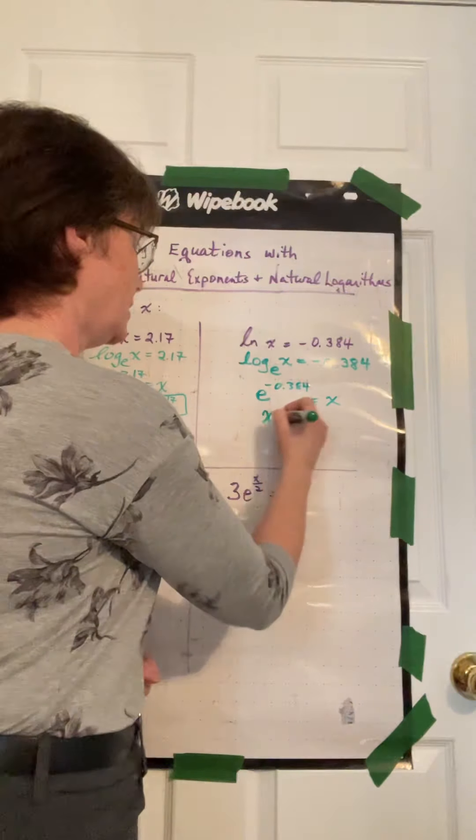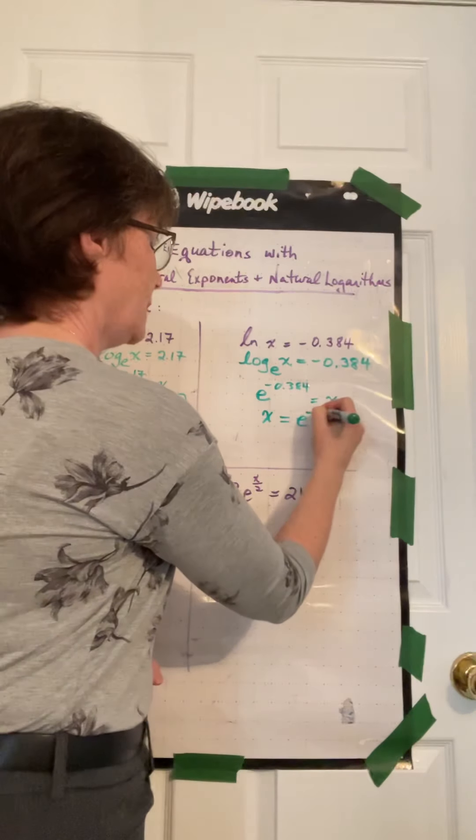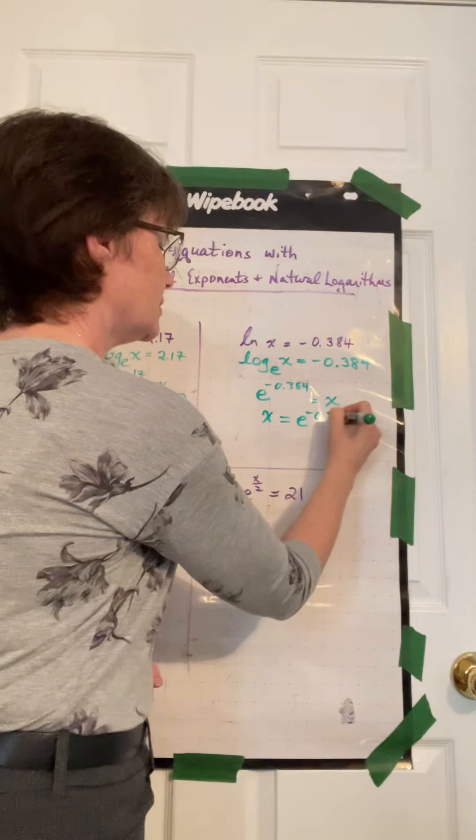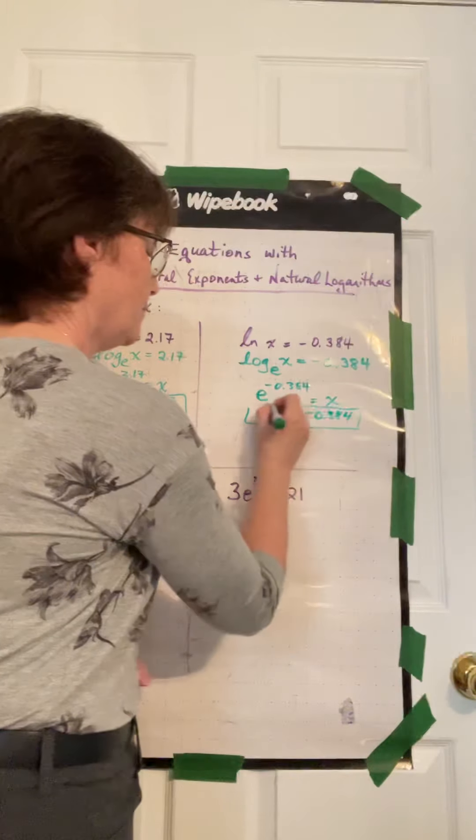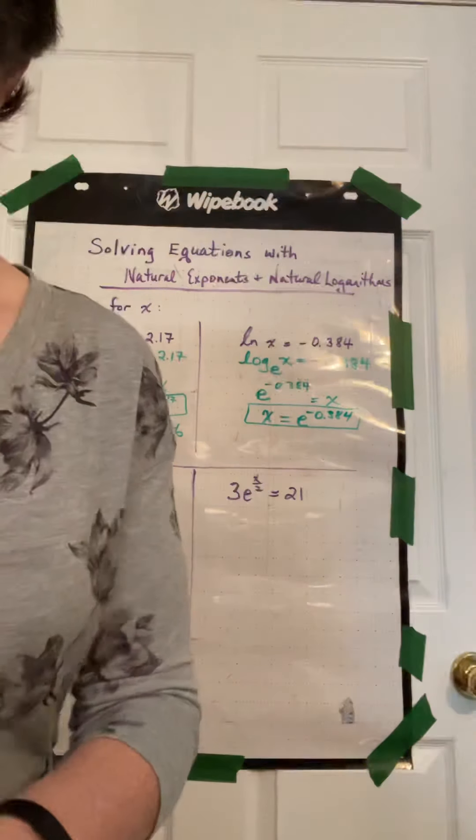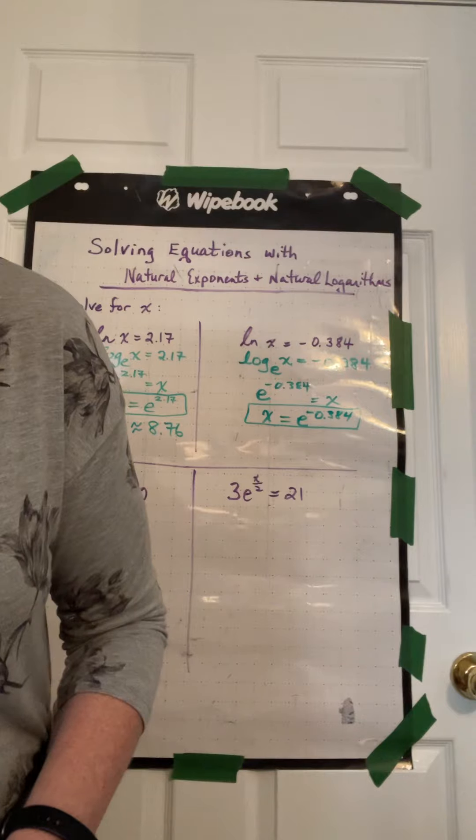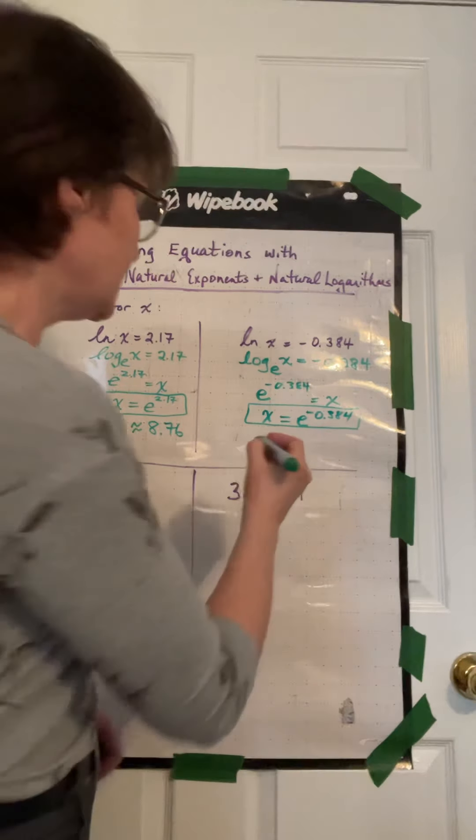We can poke that in our calculator, or you can leave this as a very acceptable answer. When we poke that in our calculator, we get 0.681.